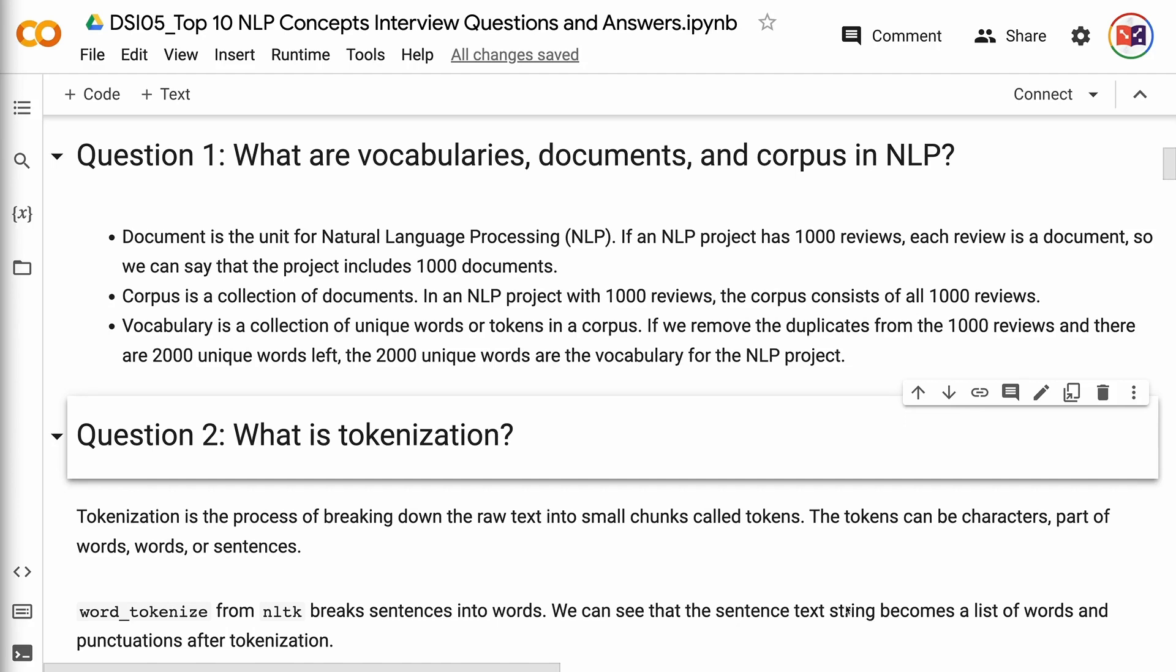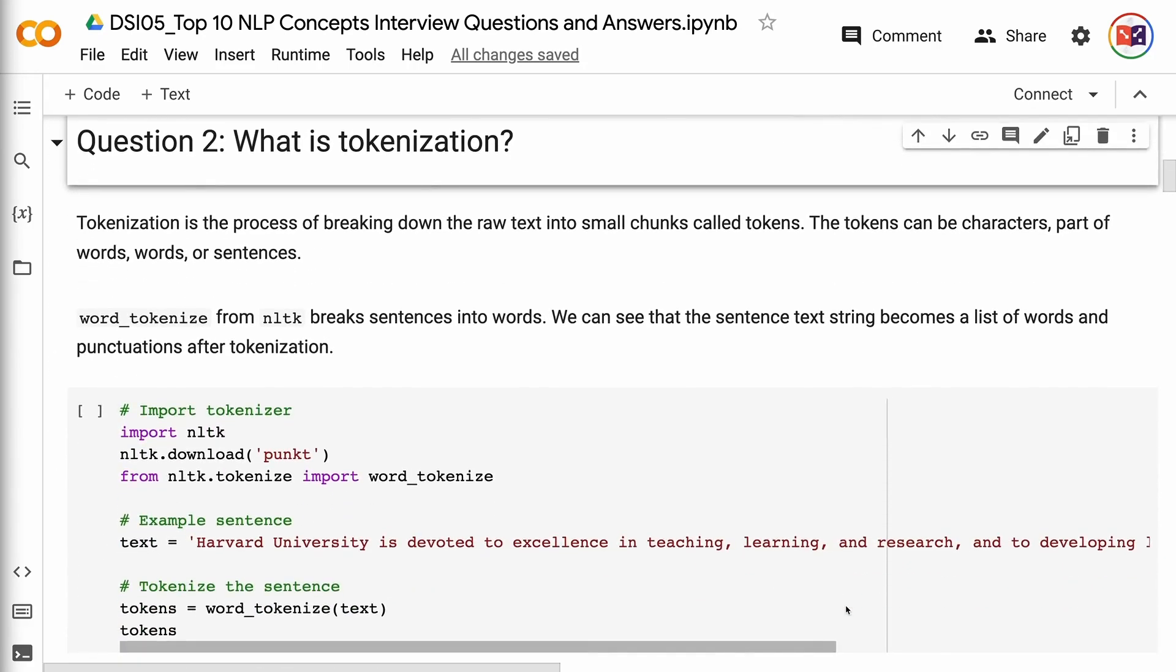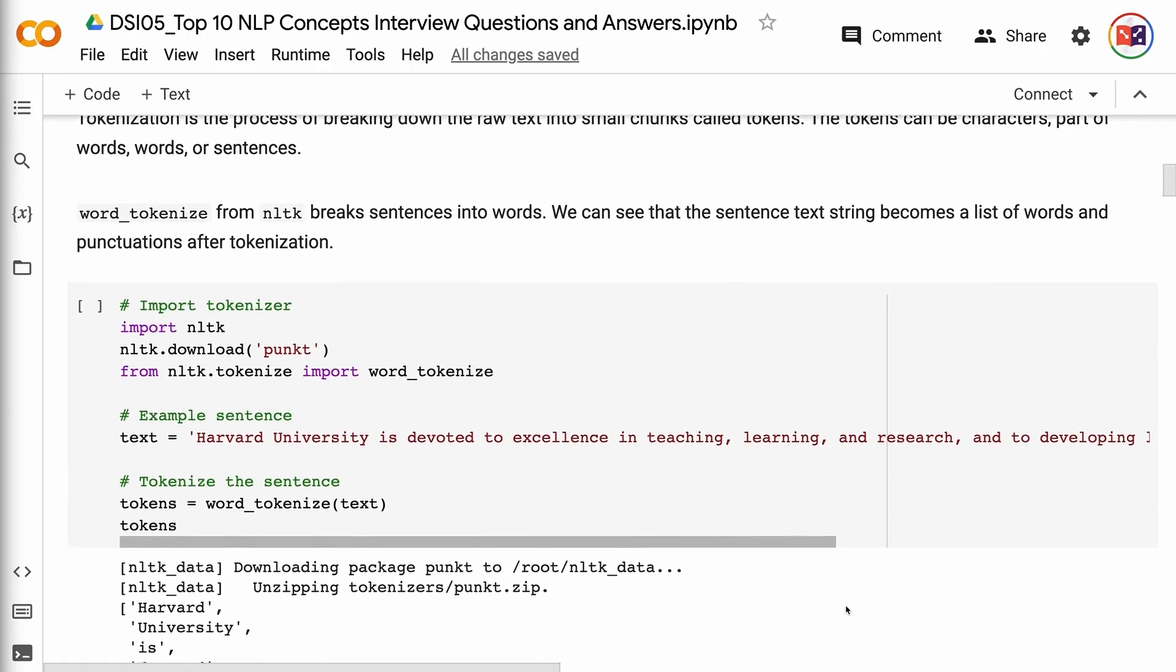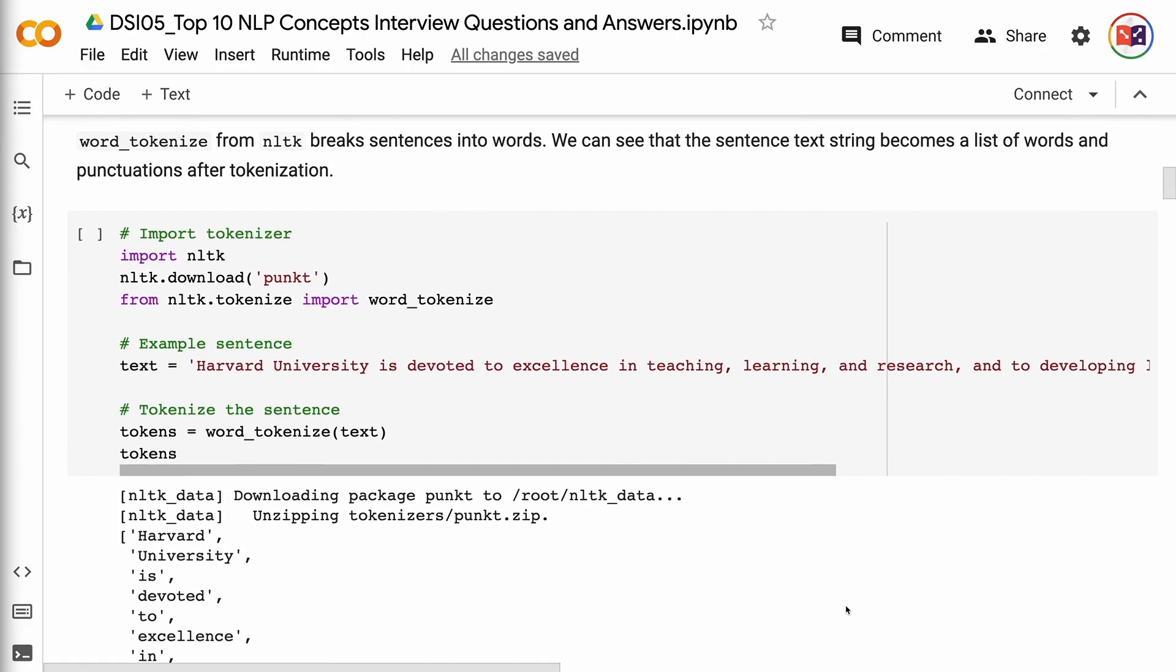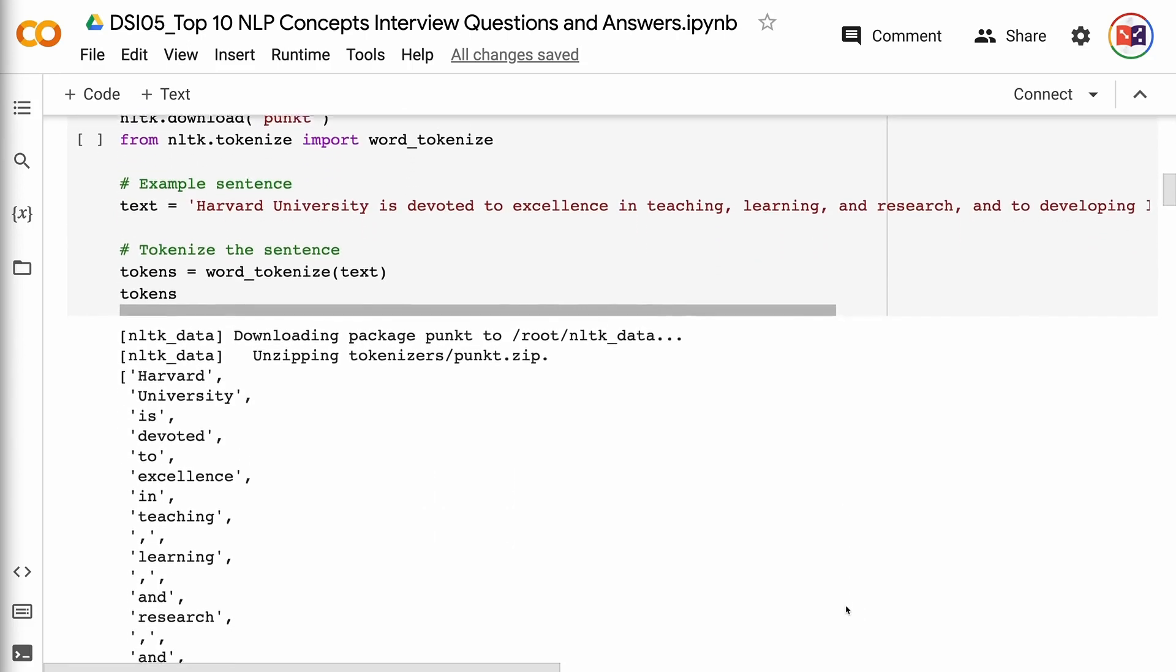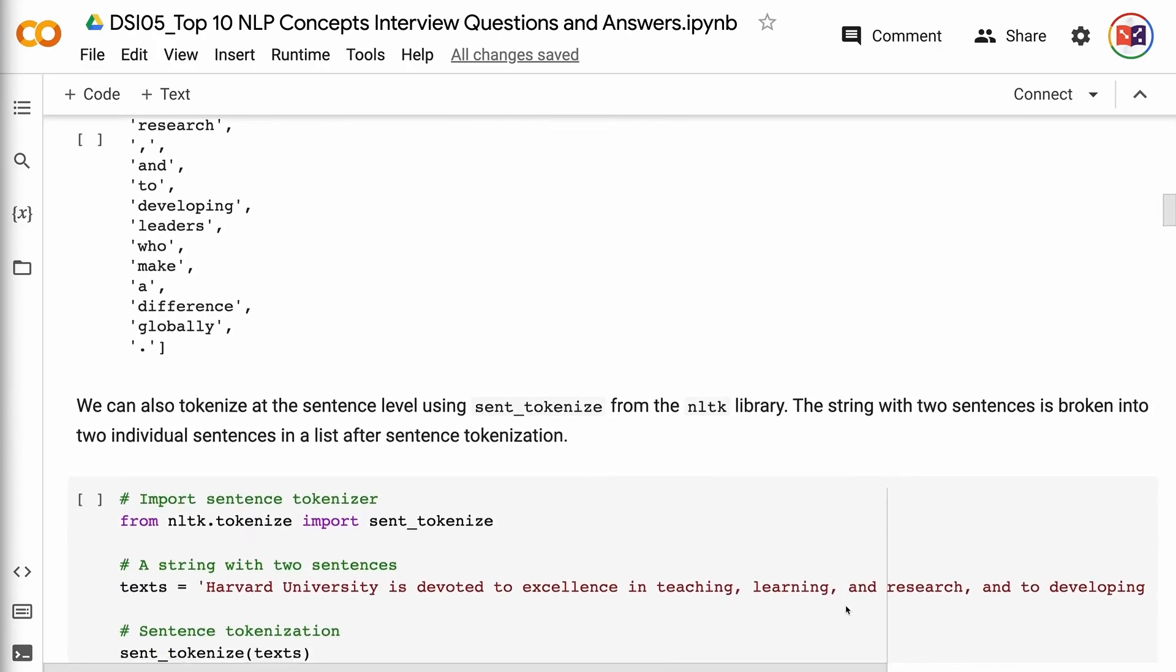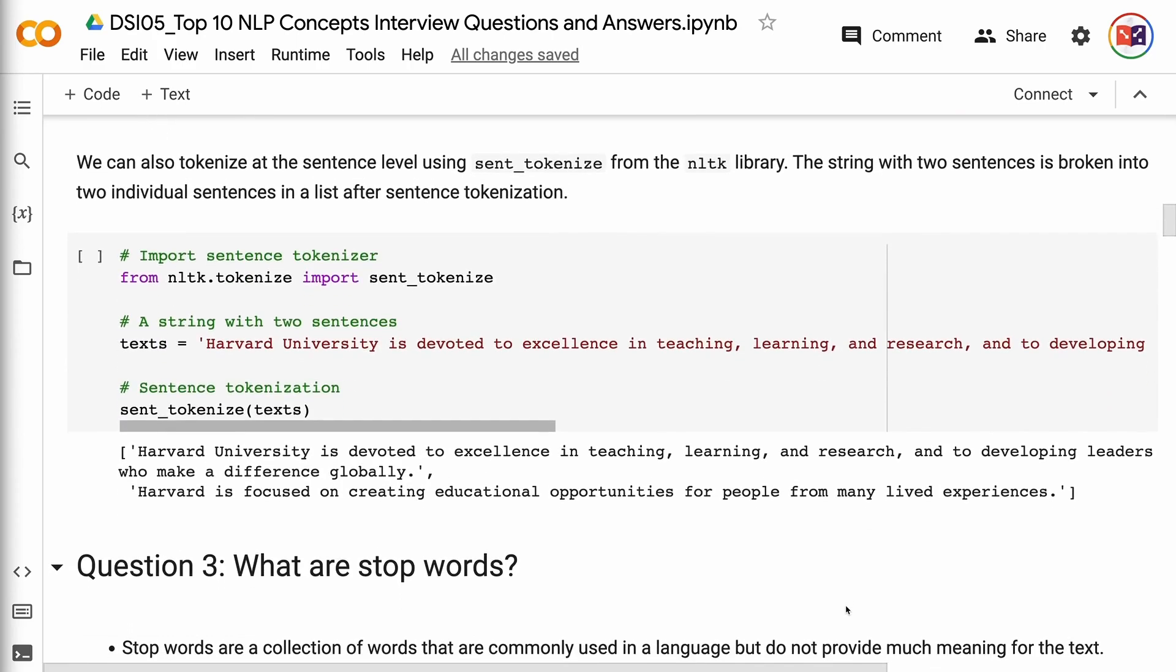Question 2: What is tokenization? Tokenization is the process of breaking down the raw text into small chunks called tokens. The tokens can be characters, part of words, words, or sentences. Word tokenize from NLTK breaks sentences into words. We can see that the sentence text string becomes a list of words and punctuations after tokenization. The link for the code is in the video description. We can also tokenize at the sentence level using sent_tokenize from the NLTK library. The string with two sentences is broken into two individual sentences in a list after sentence tokenization.